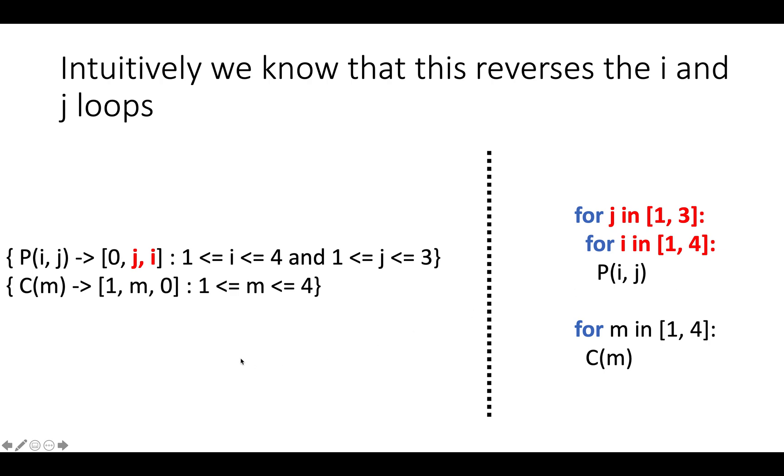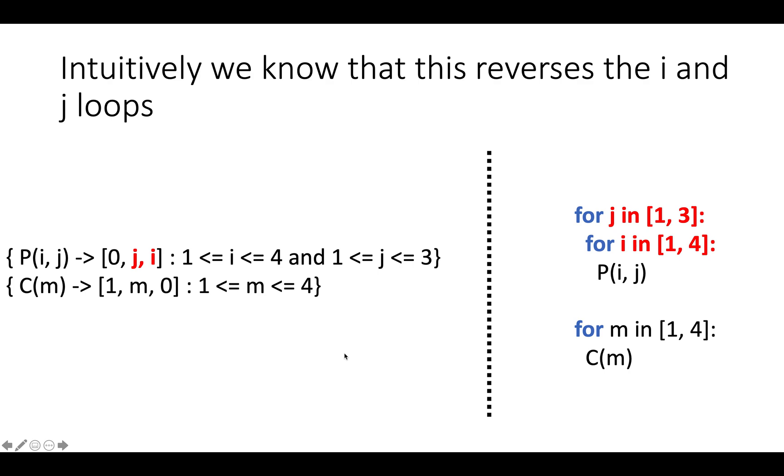But now that we've done this transformation, if we didn't already know a priori that we had gotten this from some other loop nest, and we couldn't just do a syntax transformation of that loop nest to get back to what we want, how would we turn this schedule into the loop nests that it represents? And how do we turn the intuition about how to generate this kind of loop nest into an algorithm to generate code?